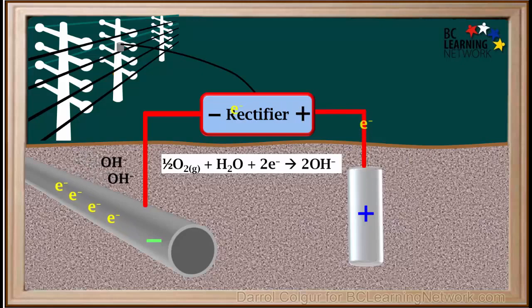The rectifier will keep supplying the pipe with electrons to replace the ones used for the reduction of oxygen. Because the pipe always has an excess of electrons, iron atoms will not need to lose any electrons, and thus will be spared from oxidation. So the pipe is cathodically protected.